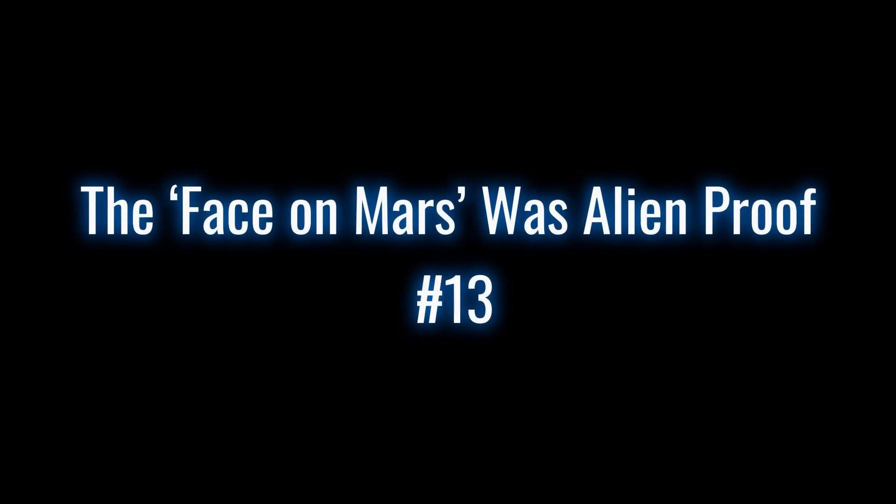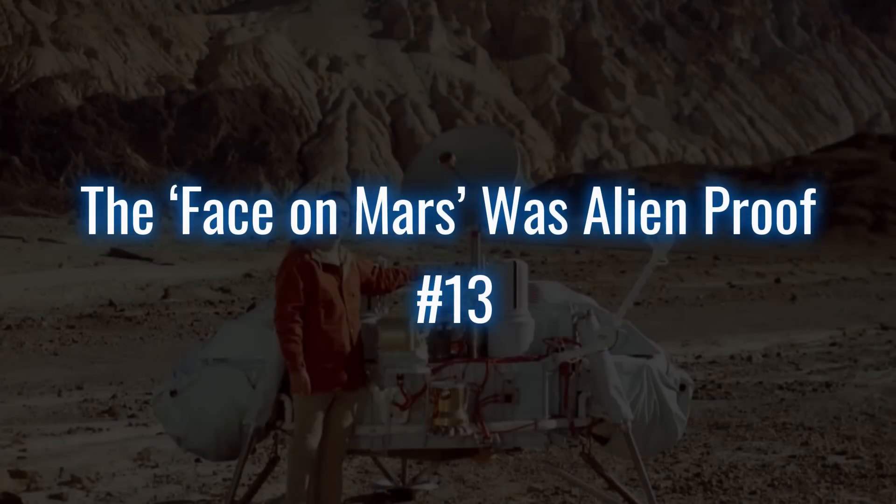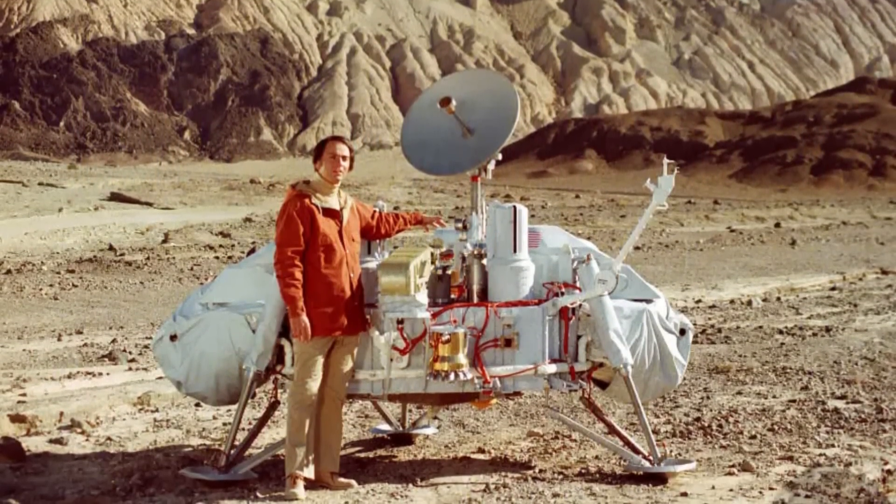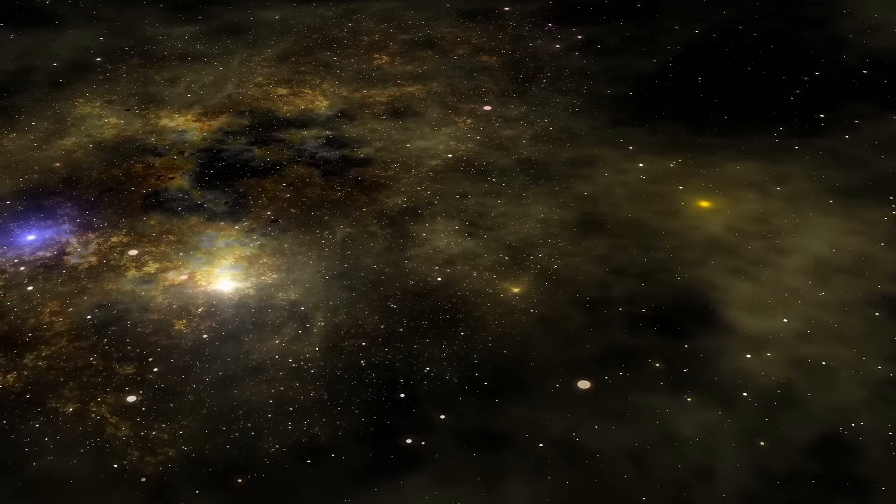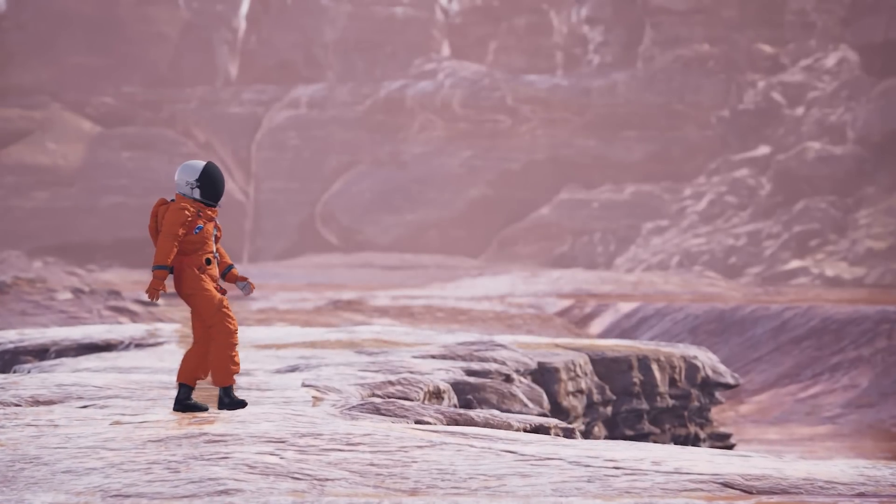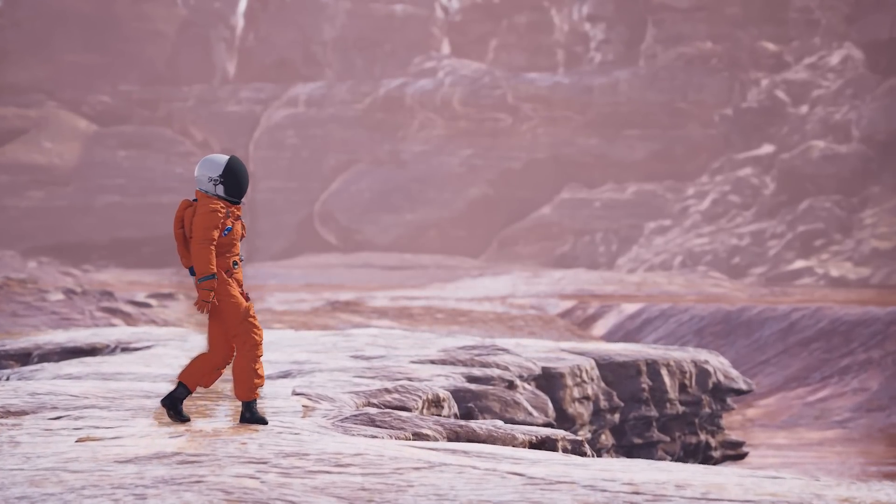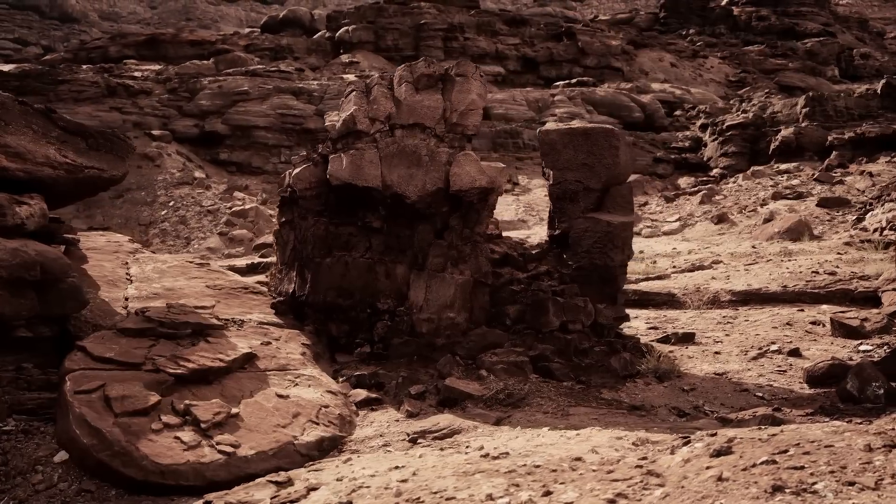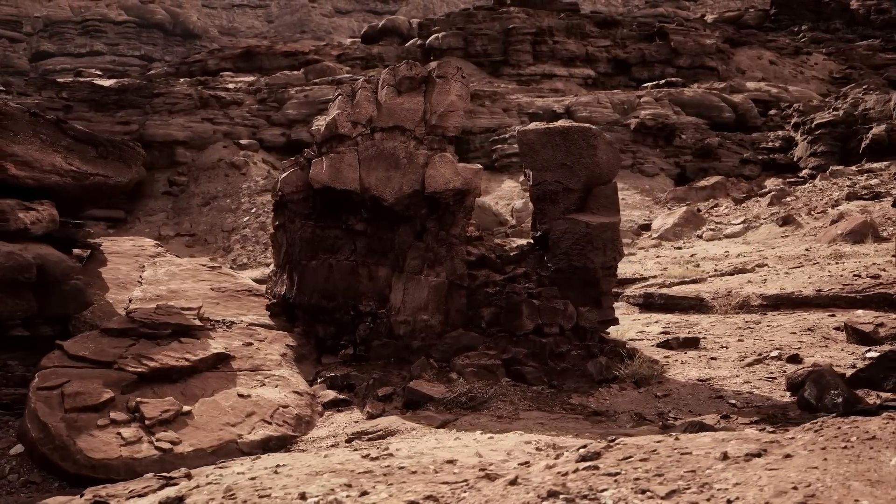13. The face on Mars. Was alien proof? Remember that 1976 Viking 1 photo? People swore it showed a giant Martian face. Conspiracy theories exploded. Aliens, ancient civilizations, you name it. Later, high-res images revealed it was just a hill with shadows. Sorry, no Martian statues.